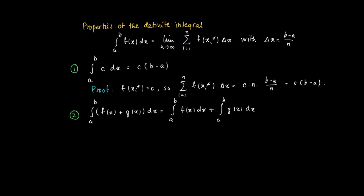Also, a nice property is linearity. So if we sum two functions f and g under the integral symbol, then we may as well choose to calculate the integral from a to b of f(x) first, and then that of g, and then add those numbers.